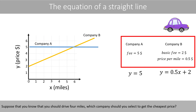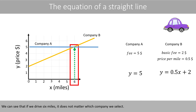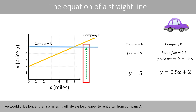Suppose that you know that you should drive 4 miles. Which company should you select to get the cheapest price? When we have drawn these lines, it is very simple to see that we should select Company B, because the price would then be only 4 dollars. We can see that if we drive 6 miles, it does not matter which company we select. If we would drive longer than 6 miles, it will always be cheaper to rent a car from Company A.